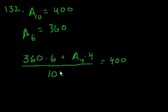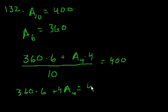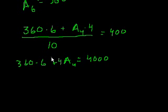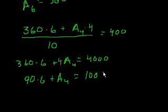Let's simplify this. We get 360 times 6 plus the average for four days times 4 is equal to 10 times 400, which is 4,000. Before I get too involved in multiplication, let's divide both sides of this equation by 4. So 360 divided by 4, that's 90 times 6, plus this divided by 4, plus A4, is equal to 1,000.